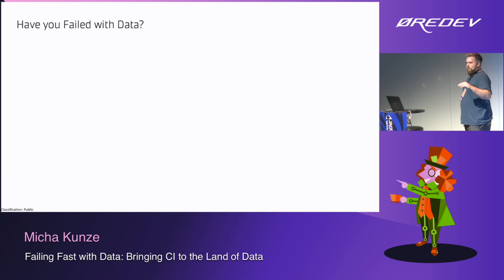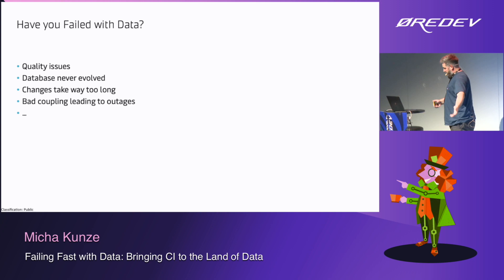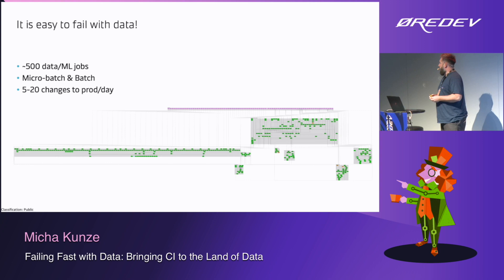Who of you has been frustrated with data or failed with data in any shape or form? The rest are lying. We share some frustration. There are a million reasons why you fail with data: quality issues, databases that never evolved — you know, mainframe systems 40 years old — changes take a long time, you introduce bad coupling. There are millions of reasons why data science projects fail or why you can't get value from data. It's easy to fail on the grand scheme of things, and easy to fail even on small things like changing a model or changing a data flow.